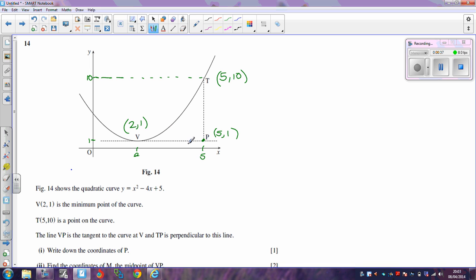We now need to find the coordinates of M, and M is the midpoint here. Now we could use the formula for midpoint, but I can see that between 2 and 5, that's 3, so this is going to be 3 and a half. So the coordinates of M are going to be 3 and a half, 1.